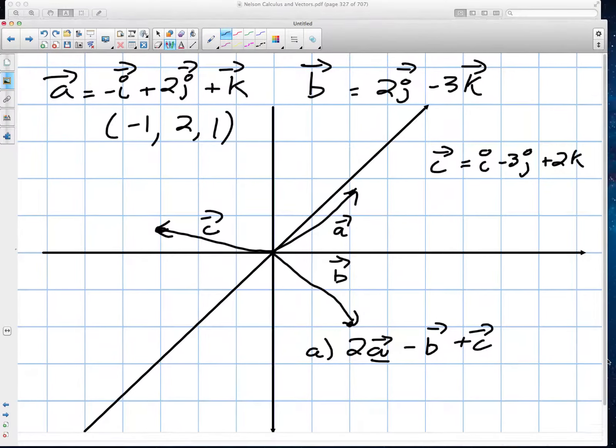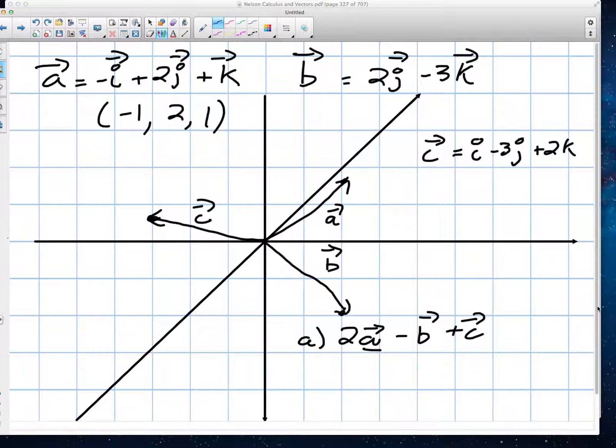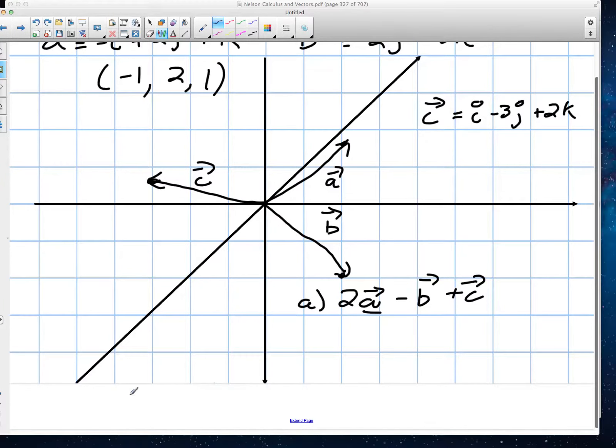We know that 2a, 2 times a, is a value of negative i plus 2j plus k. Minus b is a value of 2j minus 3k. And we're adding c, c is i minus 3j plus 2k.